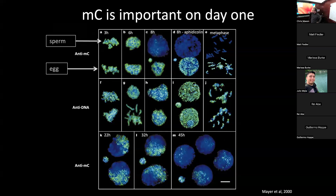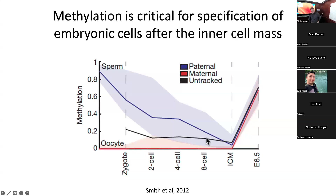What's fascinating is this divergent paternal and maternal pattern of demethylation. A 2012 follow-up paper shows the demethylation going all the way down to the inner cell mass of the embryo, which is mostly demethylated. You reset all the epigenetic marks because you want a blank slate — you need one cell to become all the cell types in your body. But once you get to embryonic day 6.5, lineage specification begins, and cells start to methylate and decorate each part of the genome to maintain their lineage long term.